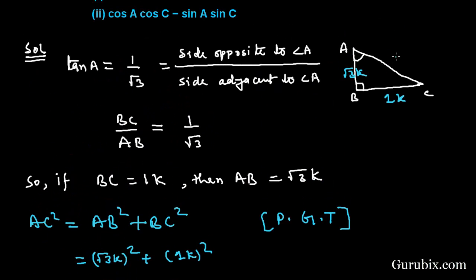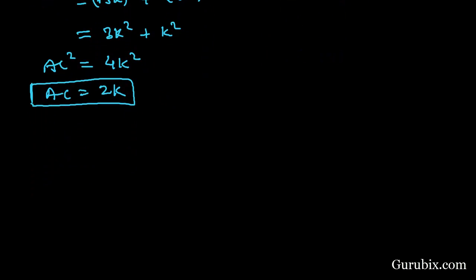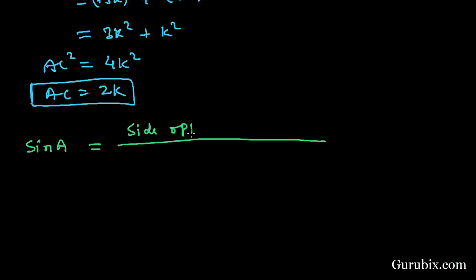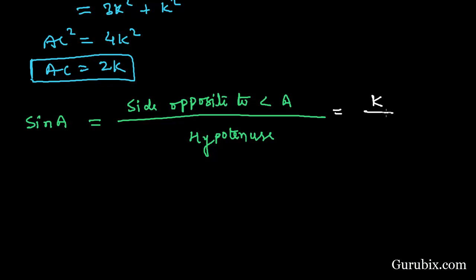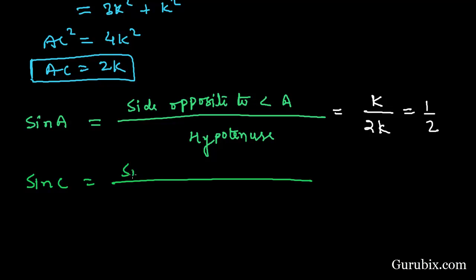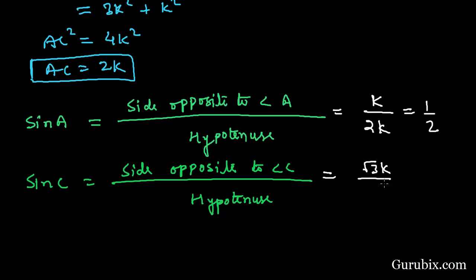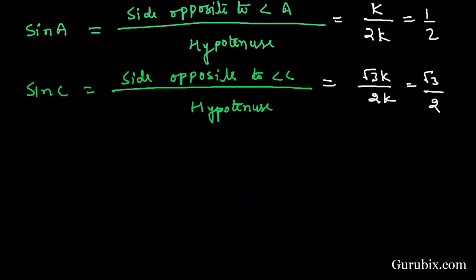AC is equal to 2K. Now we shall find sin A. Sin A equals the side opposite to angle A over the hypotenuse. The side opposite to angle A is K, and the hypotenuse is 2K. Therefore sin A is equal to 1 over 2. Now we shall find sin C: it equals the side opposite to angle C over the hypotenuse, which is square root of 3K over 2K. This means sin C equals square root of 3 over 2.